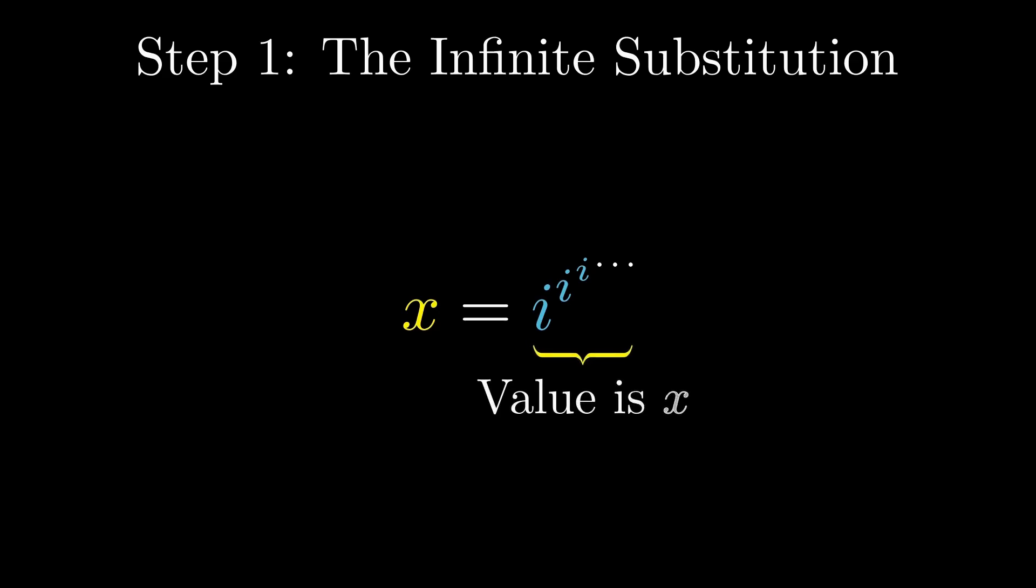Let's begin with an infinite power tower: i raised to the power of i, raised to the power of i, and so on, forever. If this tower converges, it must converge to some value. Let's call that value X.